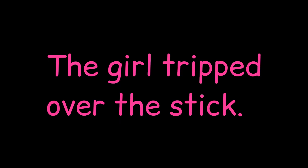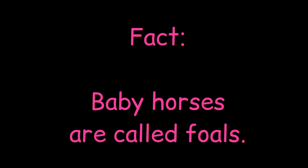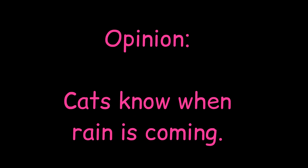An example of a sentence containing a complete predicate is: 'The girl tripped over the stick.' An example of a fact is: 'Baby horses are called foals.' An example of an opinion is: 'Cats know when rain is coming.'